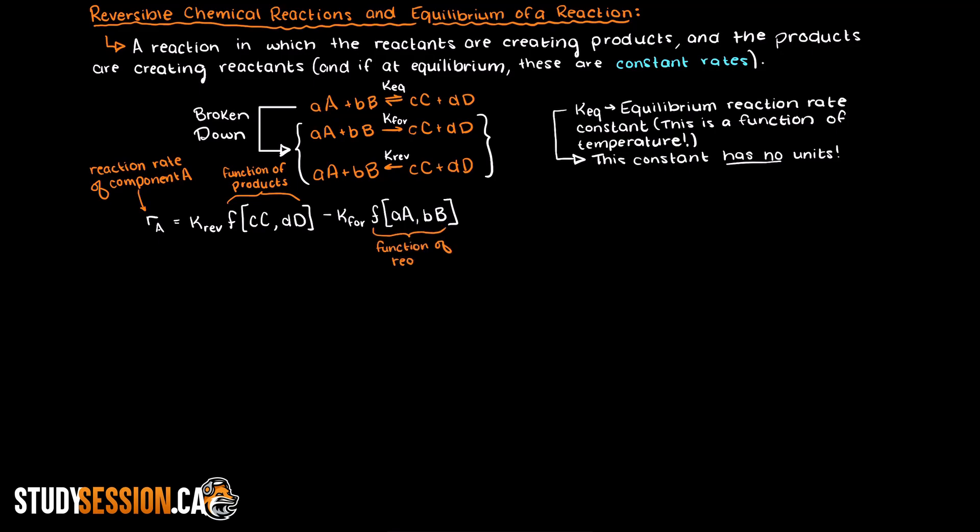Therefore we can write this as the reaction rate of this component is equal to the reverse reaction constant times some function that describes the rate of production of that reactant, which we will talk about more in a future video, minus a similar term but for the opposite. So our reaction constant in the forward direction times some function describing how much of our reactant is being consumed.